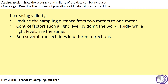To increase the validity of our results, we could reduce the sampling distance from two meters to one meter. Please don't be confused — if given an example where they sample every 100 meters, increasing validity means halving to 50 meters, giving twice the number of results, not doubling to 200 meters. We also need to control factors such as light level by doing the work rapidly, especially outside, because light levels change through the day and weather and time of year will also have an impact.